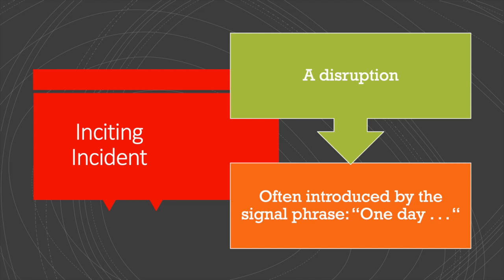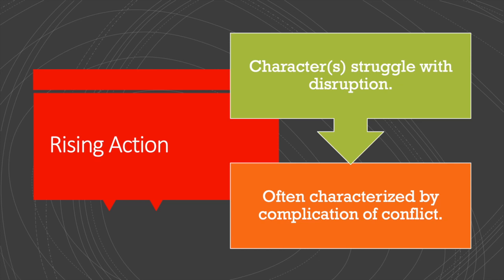On to the inciting incident. This is a disruption that sets the present action of the story in motion. If the ground situation is a powder keg, the inciting incident is the spark. If ground situation is "once upon a time there was a princess who wanted to be a fish," the inciting incident is "one day a witch knocked on her door." Look for that phrase "one day" — you'll be surprised how often it's used to signal the inciting incident.